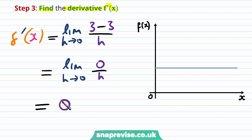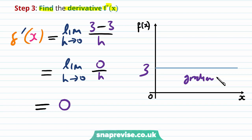We can also see this by looking at the graph of f(x) = 3. The function equals 3 everywhere, and therefore the gradient is 0. Taking any point on this curve and drawing the tangent line — you just have a horizontal line, so the gradient is 0.